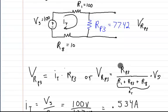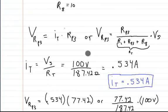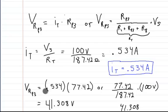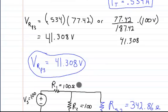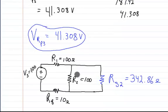That's for RP3, the voltage across this guy. And that's what I did here. Here I used this formula on this side, and over here I'm using this formula. Either way, you get the same answer, 41.308 volts. So that's the voltage across that resistor.